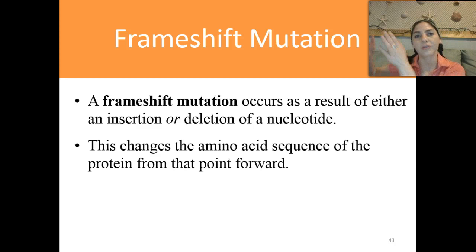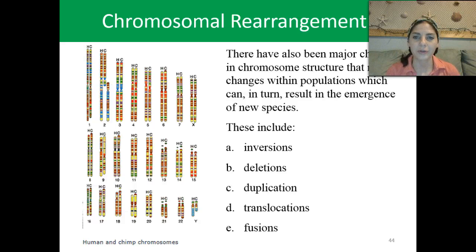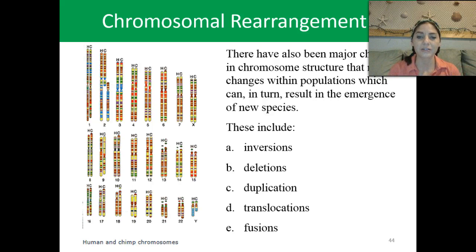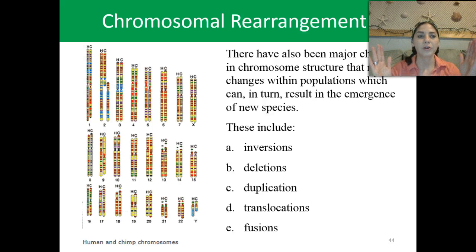There have also been major changes in chromosome structure that result in changes within populations, which can in turn result in the emergence of new species. Different types of chromosomal arrangements are: inversions — where we get a flip-flop; deletions — taking something out; duplications — a copy-paste; translocations — moving from one part to another; and fusions — where two fuse together.